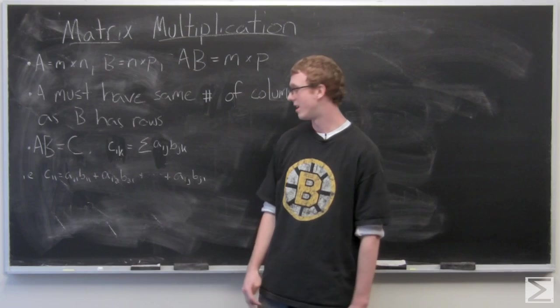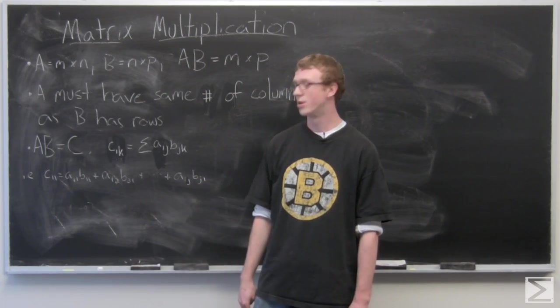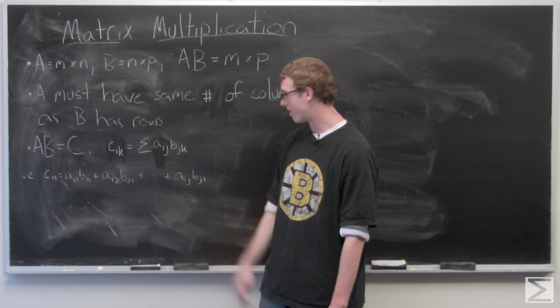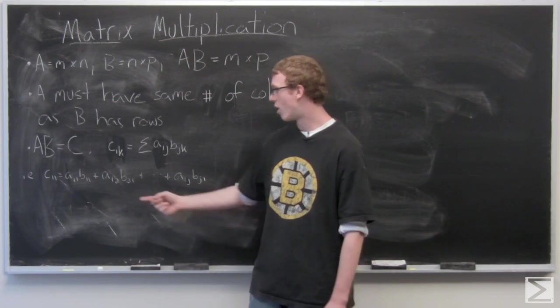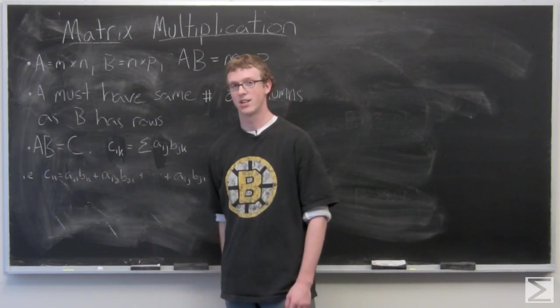So you have A1J and then until you get to the bottom of the first column of B, BJ1. And those are going to add together, all of that adds together to make C11.